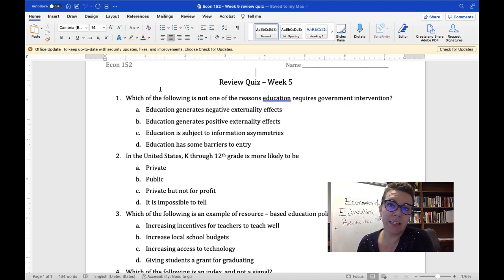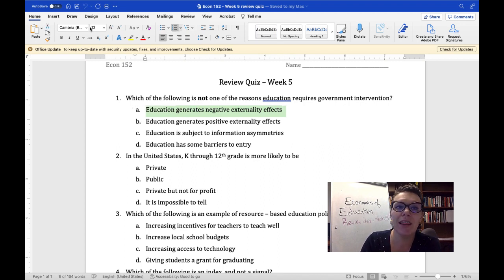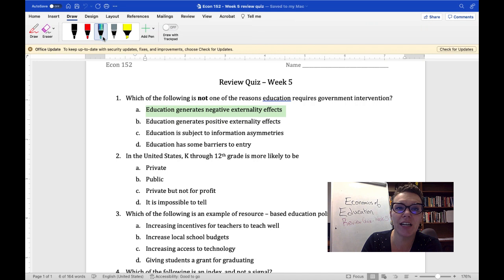It doesn't behave like a perfectly competitive market across a lot of dimensions. It generates positive externalities, it is subject to information asymmetries, there are barriers to entry, there are monopoly effects, and there's a lot going on. What's not a problem is negative externality effects. So if we're looking for one of these reasons that's not a reason for government intervention, it's going to be this one, that it generates negative externalities, because that is not true. So A.